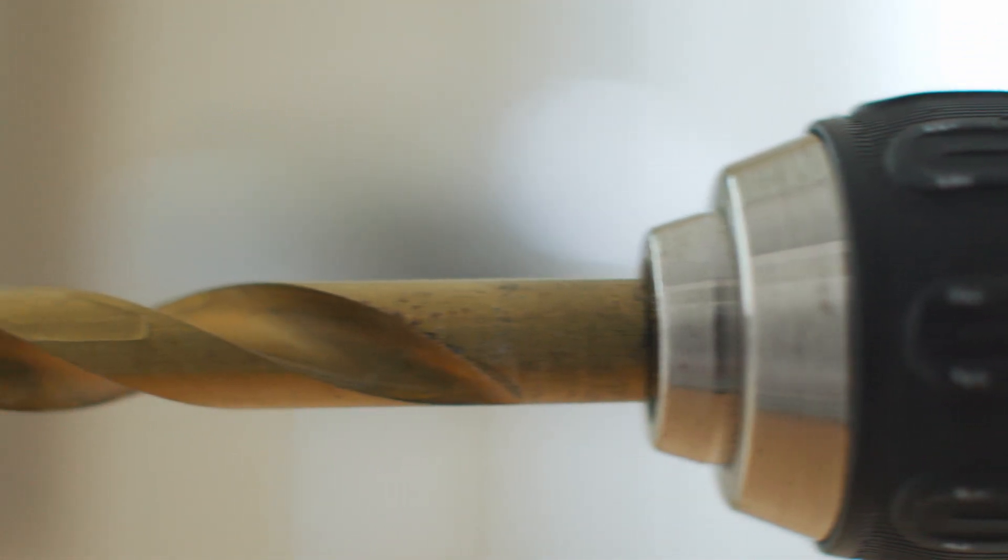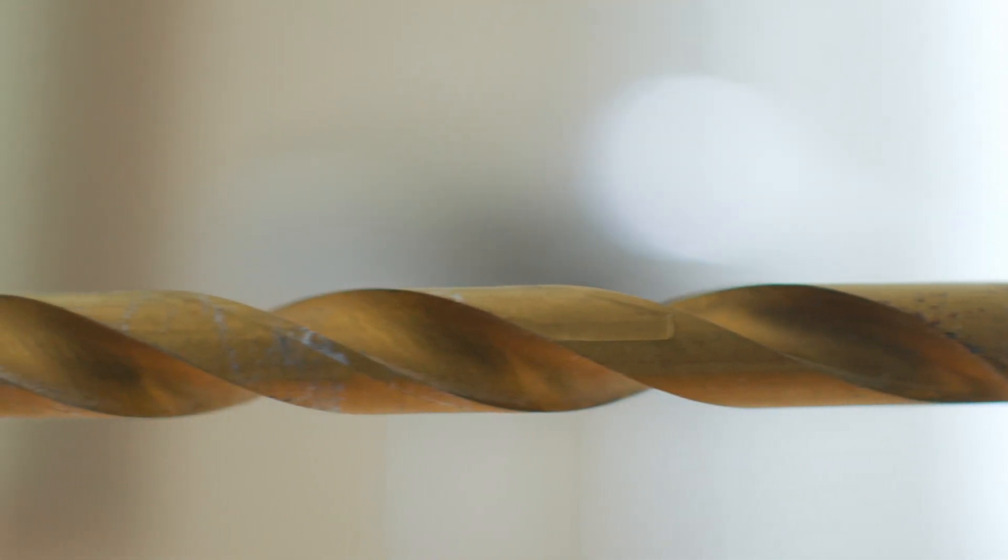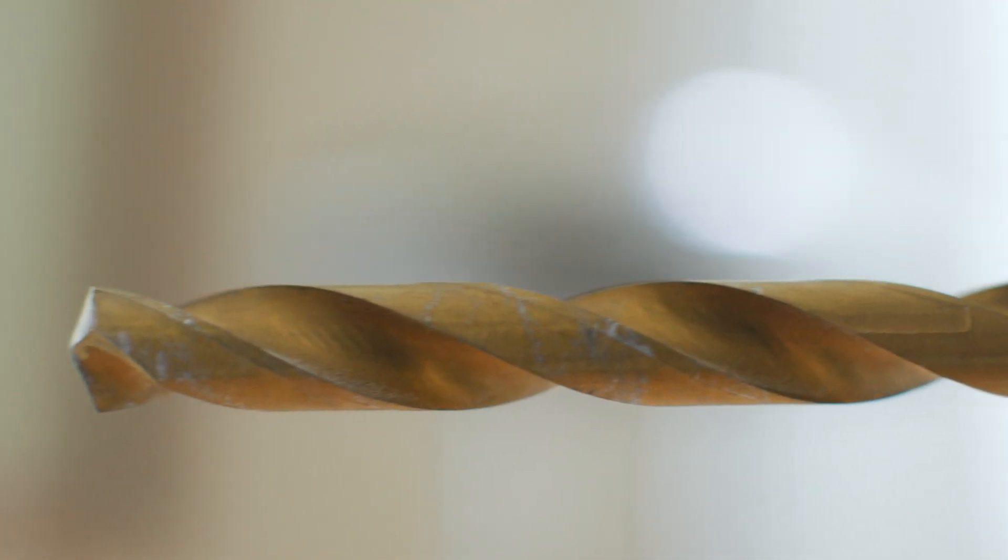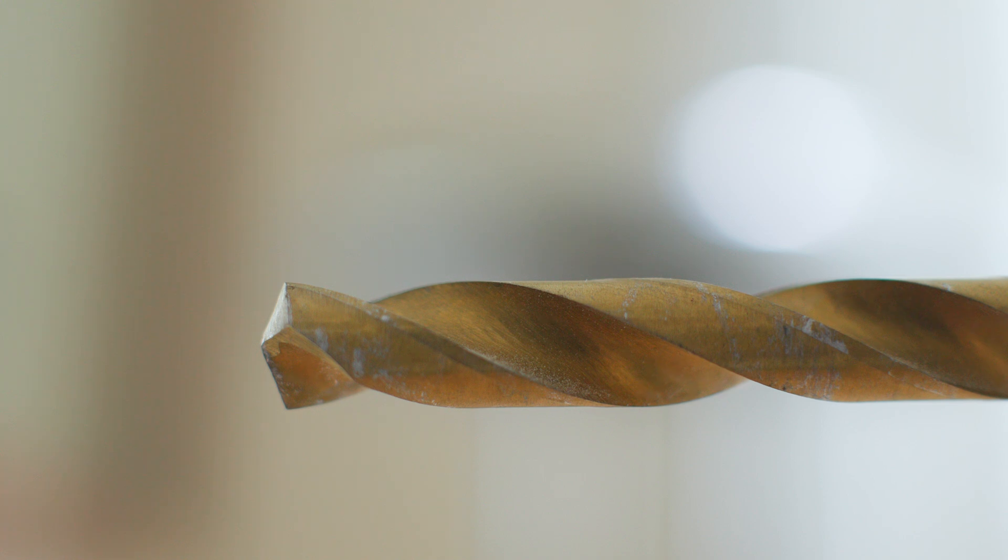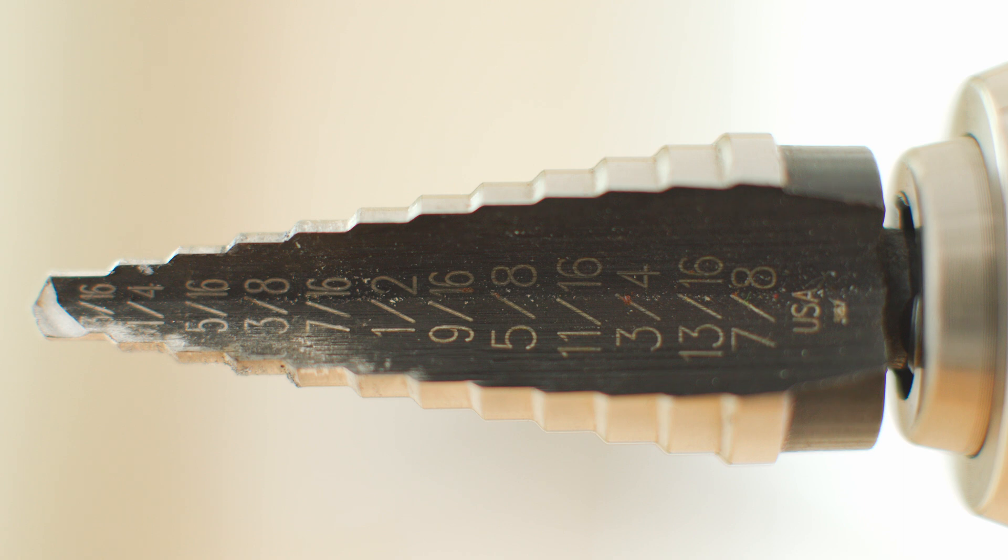The other thing is that the fluting on a standard bit is spiraled and that helps bore the bit into your material, particularly if you're drilling through metal. When they get in there, sometimes they can grab onto the metal and cause it to spin. That can be really dangerous. I find with this particular stepped drill bit that that happens a whole lot less.